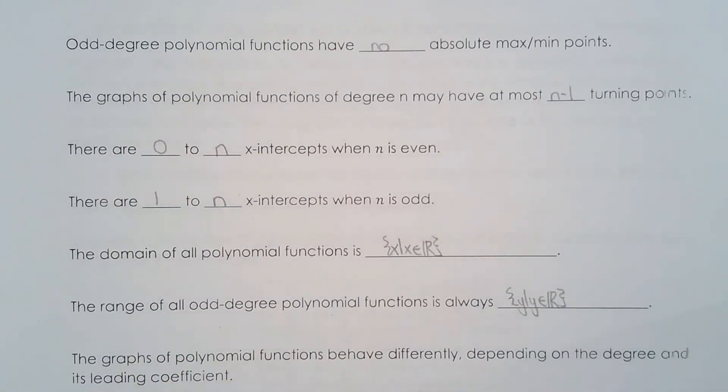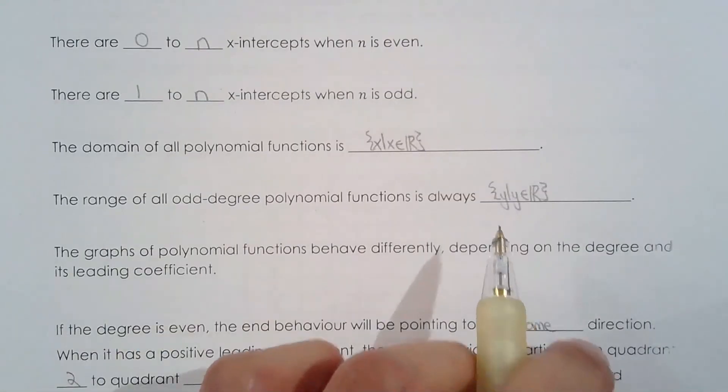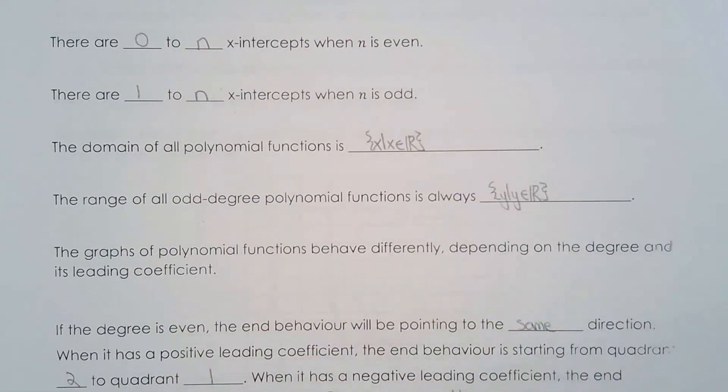Domain is all real numbers regardless of the polynomial. The range for odd degree polynomials is always all real numbers.